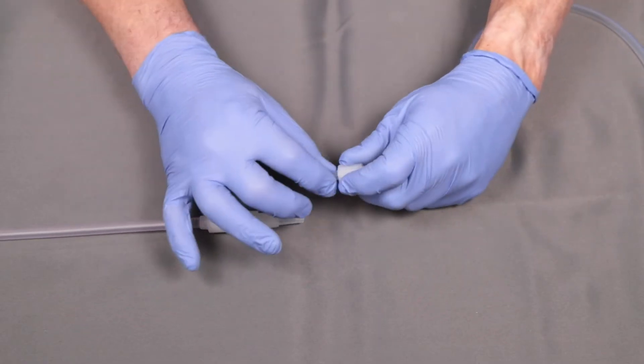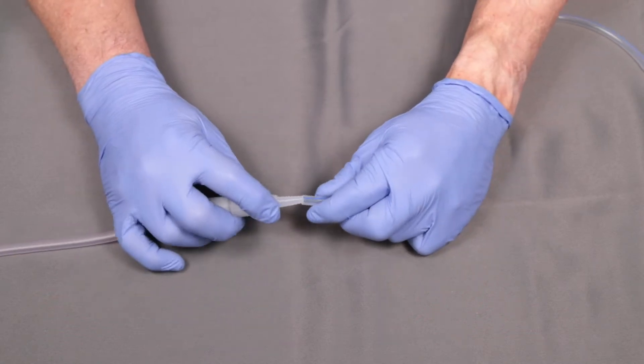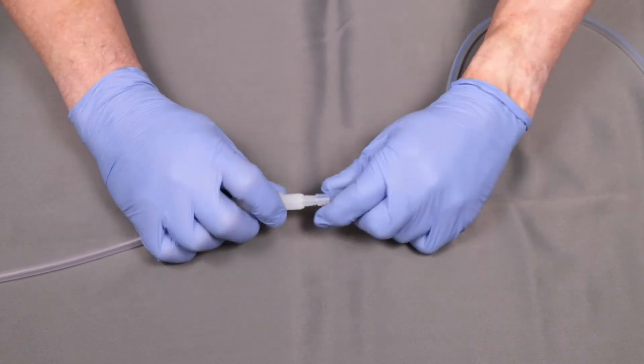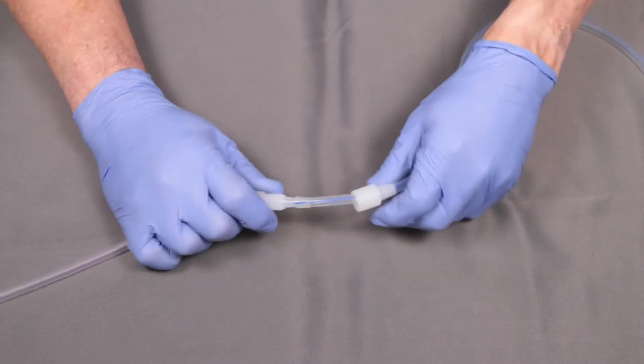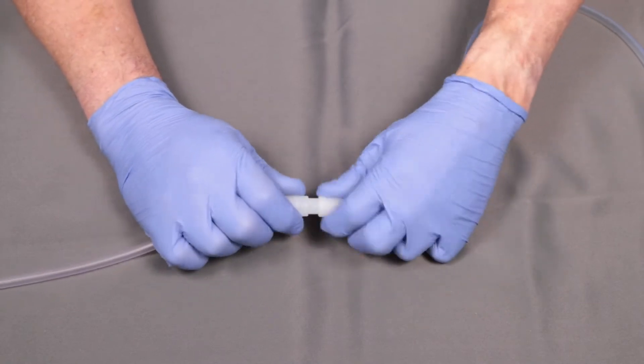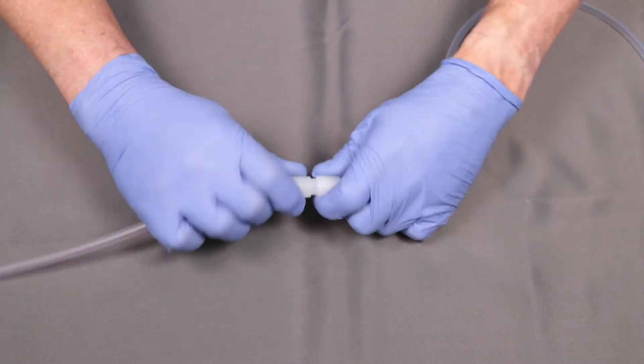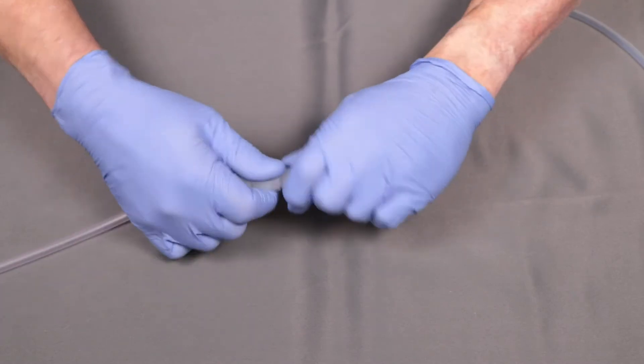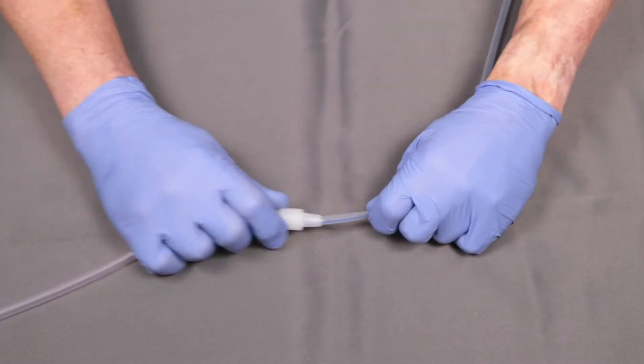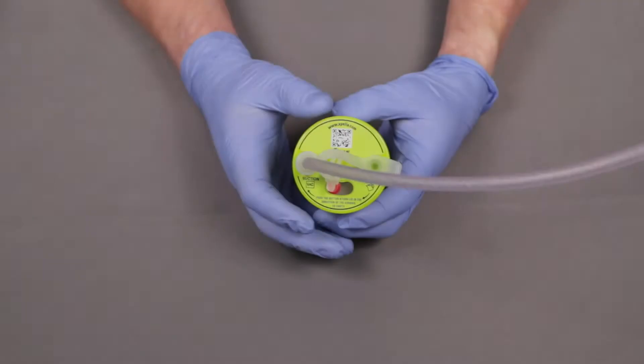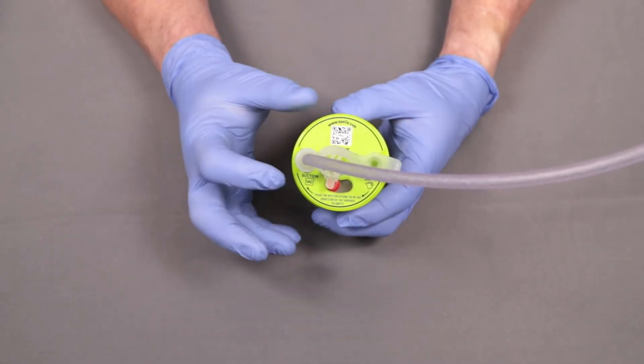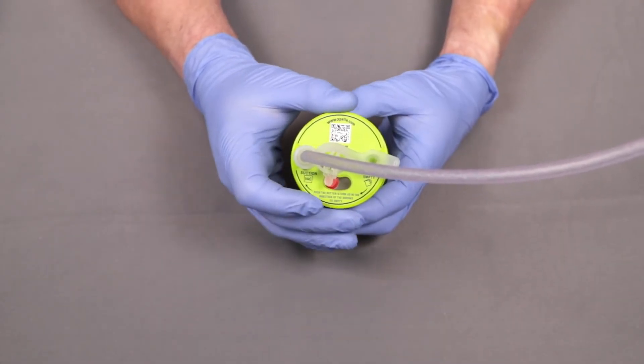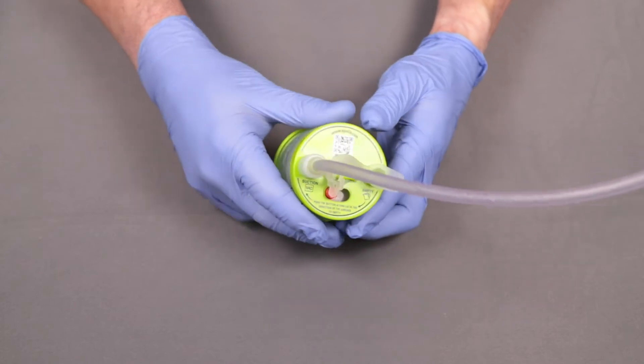Connect the Expeller Mini to the silicone drain. Make sure the red button is on vac. Proceed to activate the device.